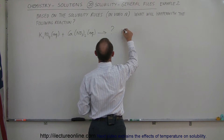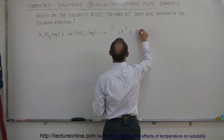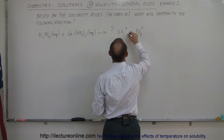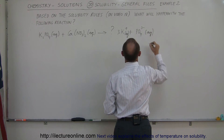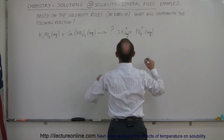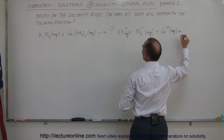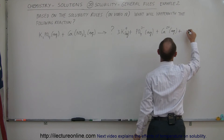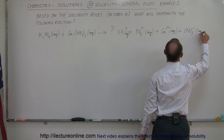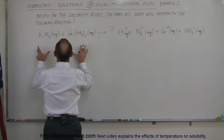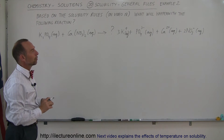So we're going to end up with the potassium ion — there's going to be three of those — and the phosphate ion, which is 3-, all in aqueous solution. Plus the calcium ion, which is 2+, also in aqueous solution. And then we're going to end up with the nitrate ion, NO3-, two of those, also in aqueous solution. Both of those compounds are soluble, so they go ahead and break apart into their individual ions.